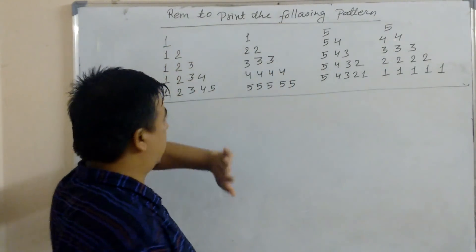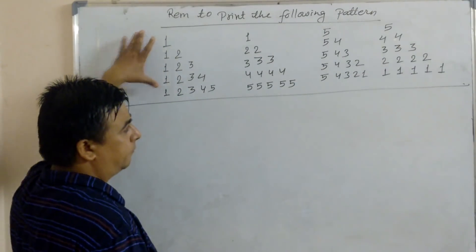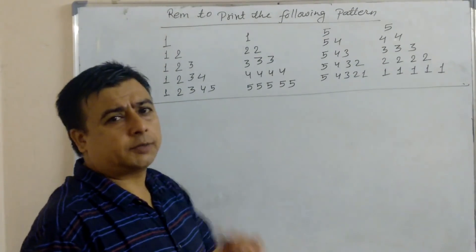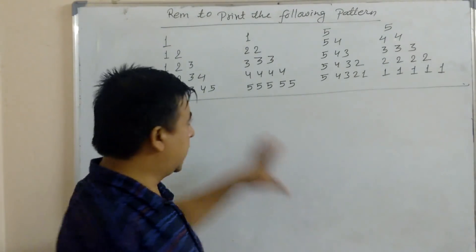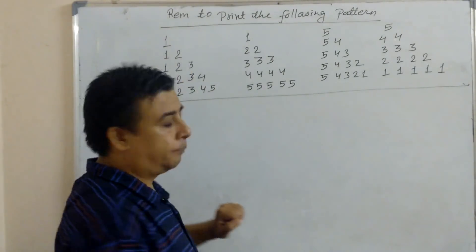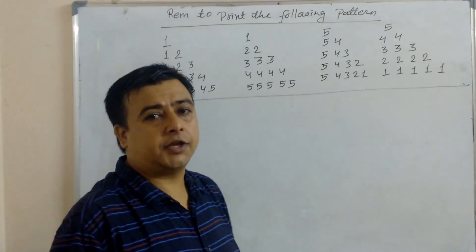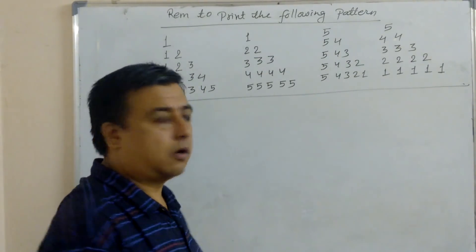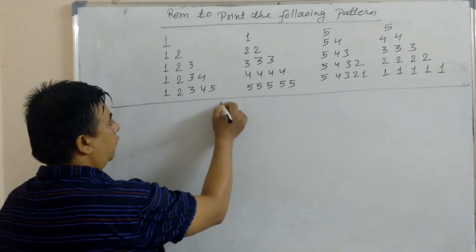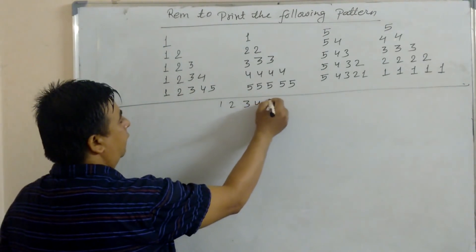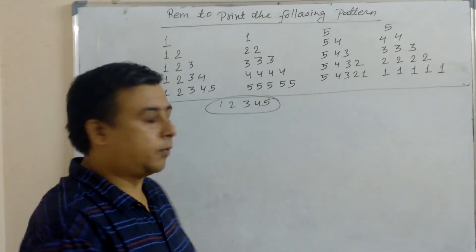I aim to print the following pattern. Before printing this, I will show you a small program which does not use the nested loop. We use a nested loop here — an outer loop and an inner loop. But first, I will teach you only one loop: how to print 1, 2, 3, 4, 5. After that, we will mix in the inner loop also.